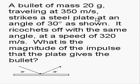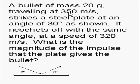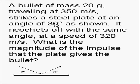On the side of your problem, instead of looking at or thinking about the problem at all, you just put what's given: mass 20 grams, initial velocity 350 meters per second, final velocity 320 meters per second, and a 30 degree angle.